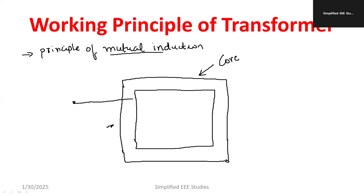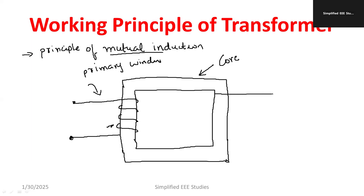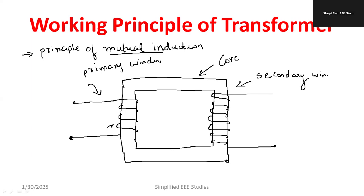Now let us draw the transformer winding. There are two types of winding: one is known as primary winding, and the other one is known as secondary winding. Winding is usually made up of copper conductor only.